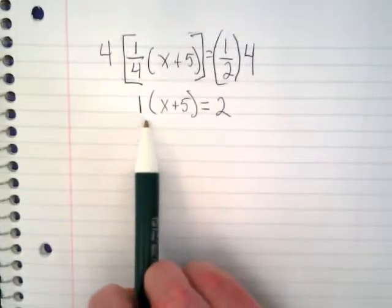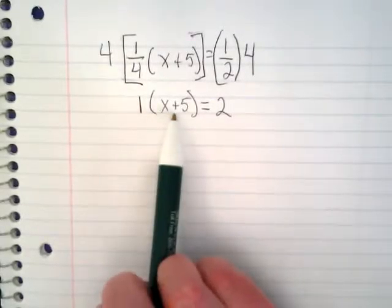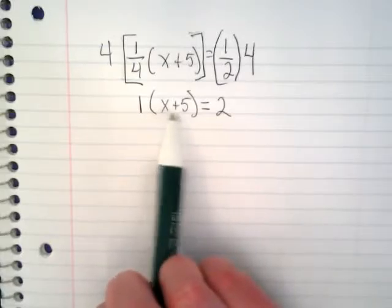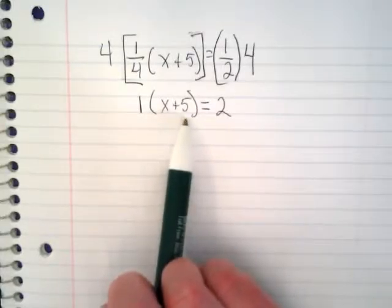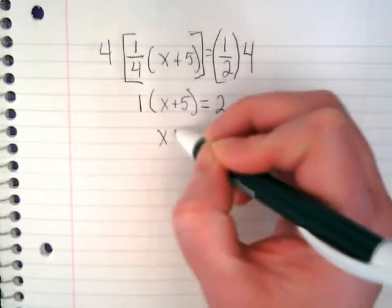And now I can look at this and say, okay, well I've got a 1 times x and a 1 times 5. Is anything going to change in here when I multiply them? If I multiply them by 1, they stay the same.